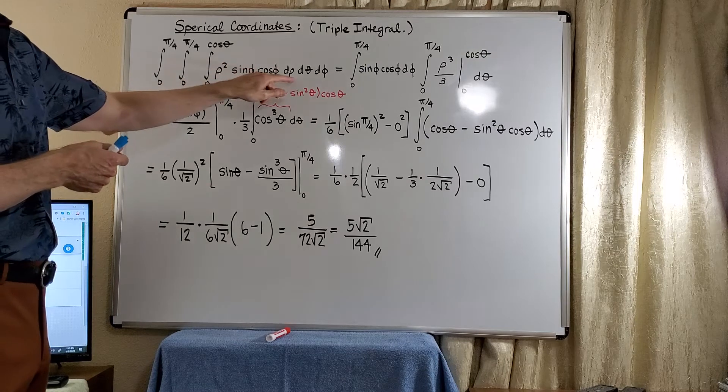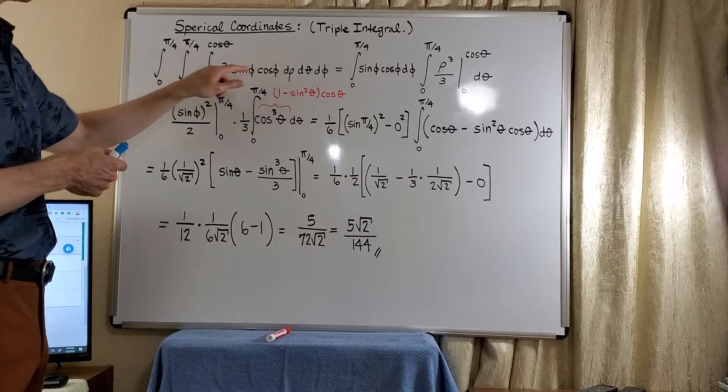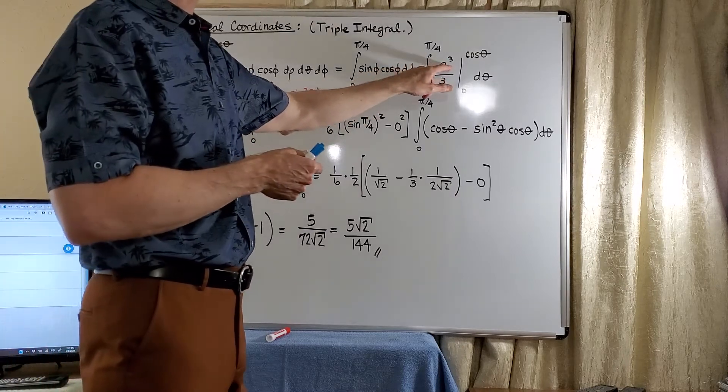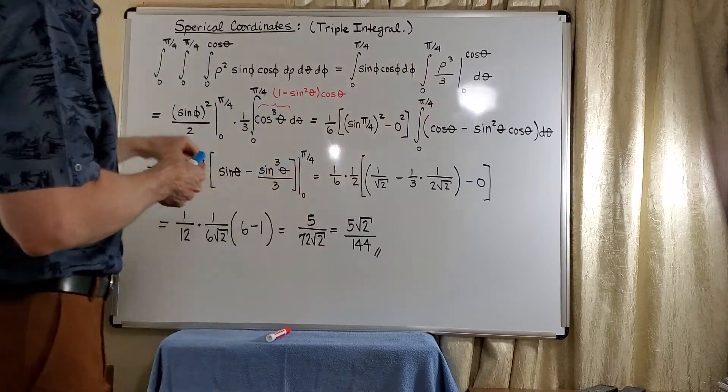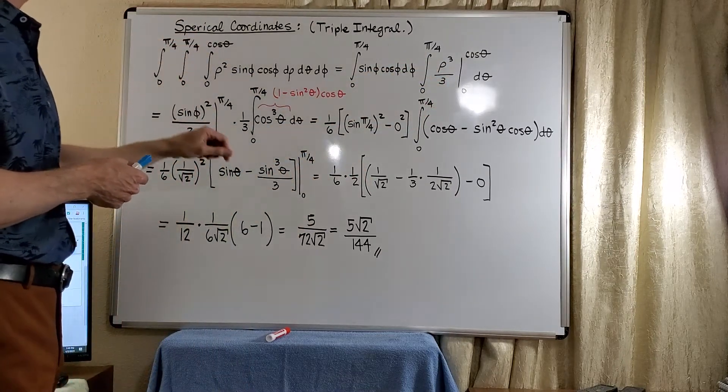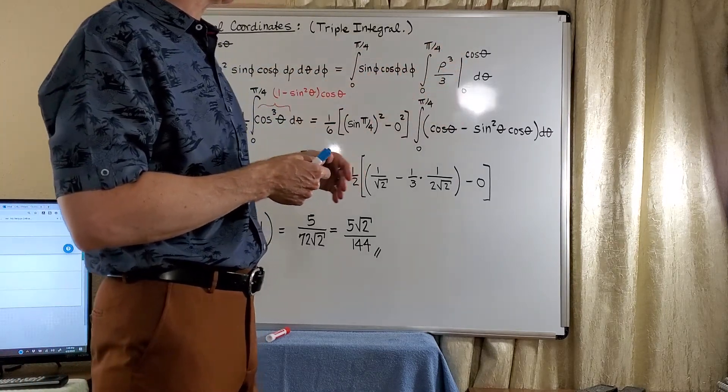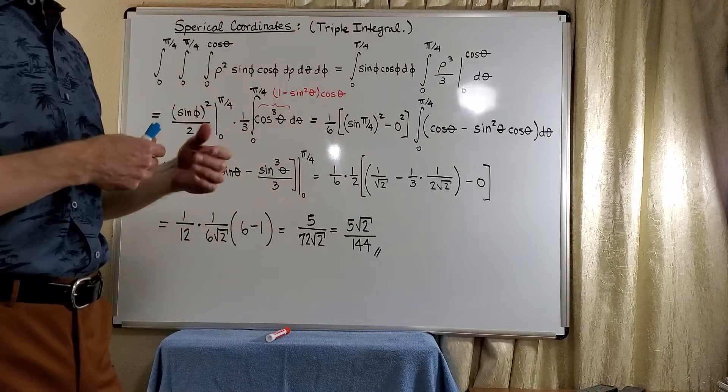So notice first, our first integral is just with rho. That's just add 1 divided by the new power. So we get rho to the third divided by 3. And of course, the limits of integration are cosine theta and 0. I went ahead and wrote this in since it's just a little bit more complicated, and we need to get used to it.